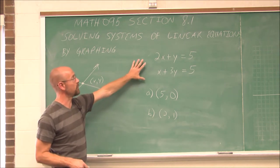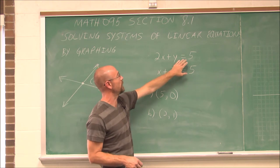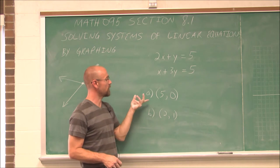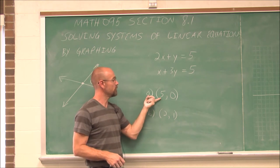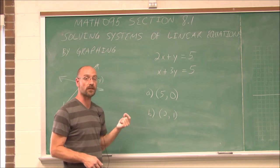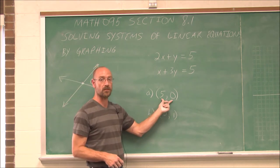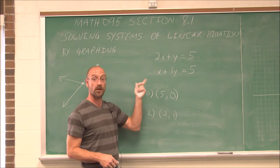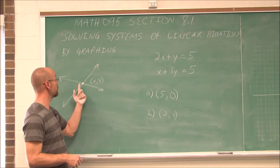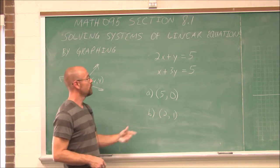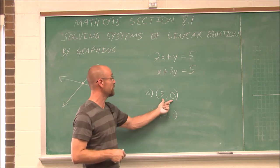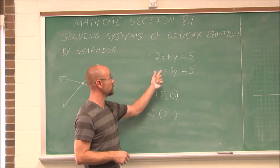Let's look at an example. If I have 2x plus y equals 5, and I have the line x plus 3y equals 5, what if I was asked: is the ordered pair (5, 0) a solution to the system? Well, if it's a solution to the system, it has to be true in both equations — this common pair that they'd share. Lines can only intersect in one spot, so I have to plug it into both equations to determine if this is a solution.